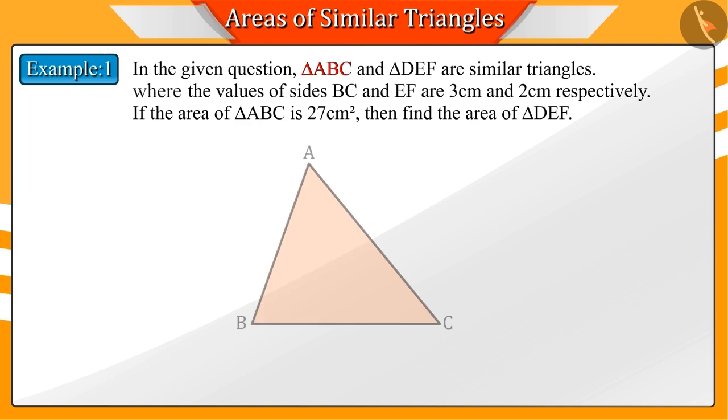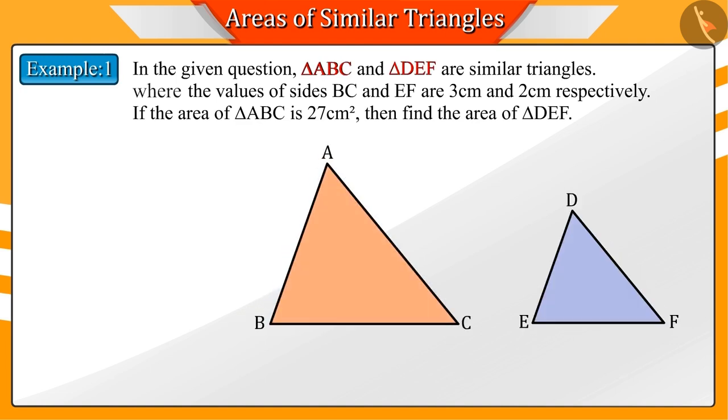The given triangle ABC and triangle DEF are two similar triangles with sides BC equals 3 cm, EF equals 2 cm. If the area of triangle ABC is 27 square cm, then can you find the area of triangle DEF?